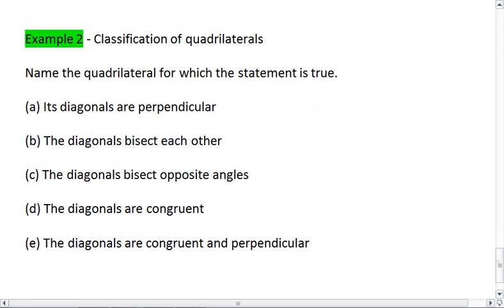Example 2. If you're good with those theorems, if you're good with that classification, move on to Example 2. If not, go back, review, make sure you understand how the diagonals relate to both a rhombus and a rectangle.